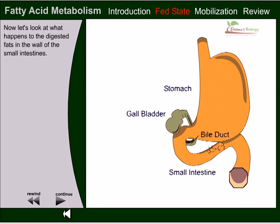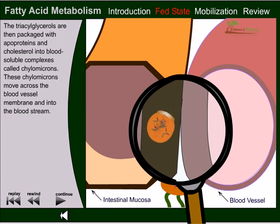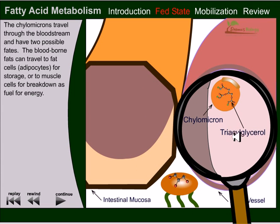The triacylglycerols are then packed into apoproteins — proteins called apoproteins — and cholesterol, into blood-soluble complexes called chylomicrons. These chylomicrons move across the blood vessel membrane and into the bloodstream. The triacylglycerol is further coated with proteins. The chylomicron travels through the bloodstream and has two possible fates.